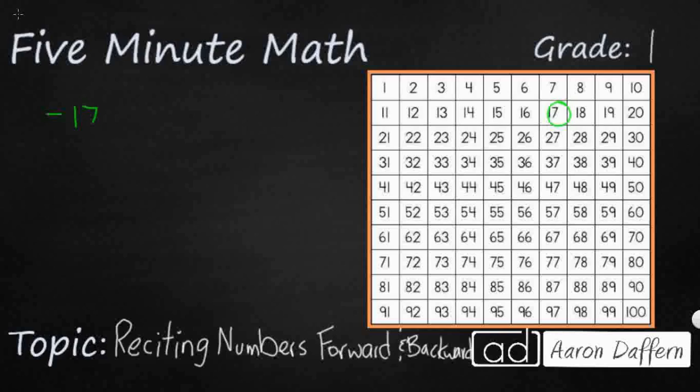So if we wanted to count backwards starting from 17, let's look at the 100 chart. When we're counting backward, that means we're going to the left. And what's happening is our 1's digit is getting smaller. So you notice in 17 that the 10's digit is 1, and that's going to stay the same all along this row. It's going to be 1, but it's that 1's digit that counts backwards by 1.